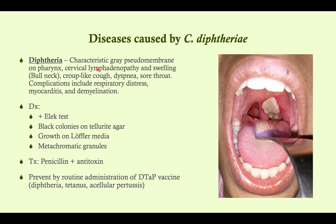The disease caused by C. diphtheriae is diphtheria, specifically diphtheric croup — that's how it will appear on the exam. Cutaneous disease associated with dirty needles or heroin use is not going to come up; only the upper respiratory tract disease will. It looks a lot like croup clinically — remember croup is caused by parainfluenza virus — but the hallmark finding is a characteristic grayish-yellow pseudomembrane in the pharynx, which is a dead giveaway for diphtheria. Other symptoms include pharyngitis, lymphadenopathy, neck swelling, cough, dyspnea, and sore throat. Complications include respiratory distress, myocarditis, and demyelination.